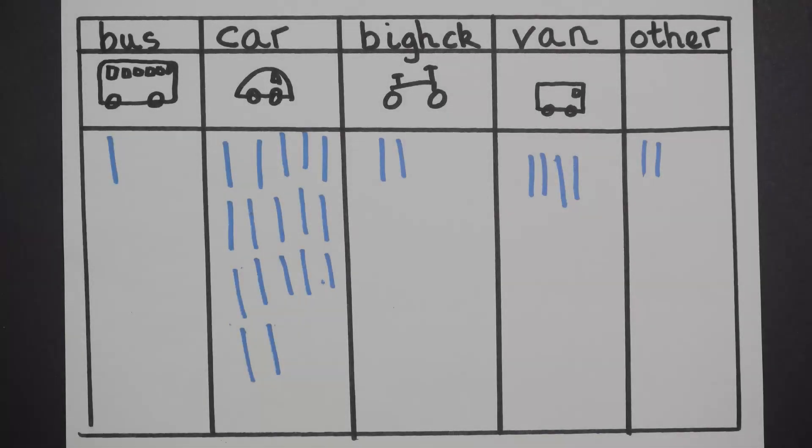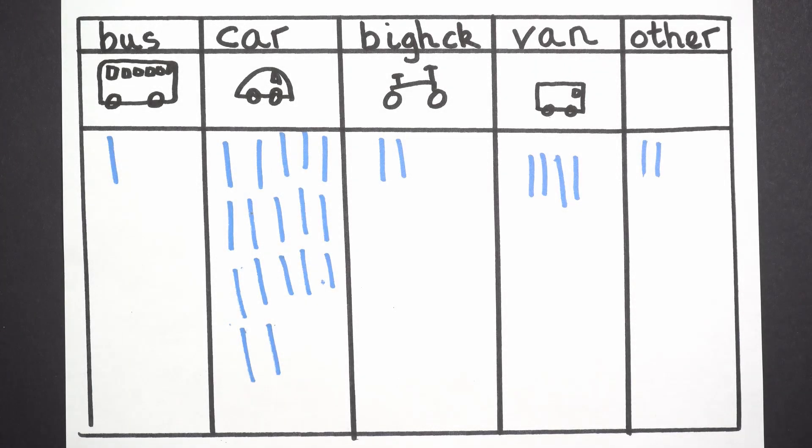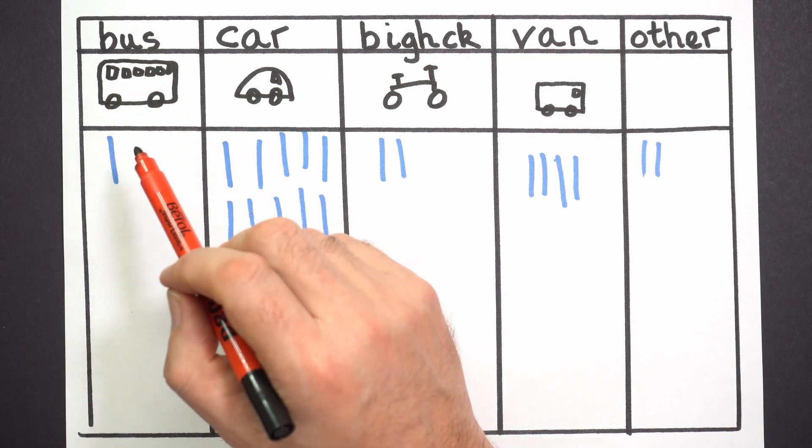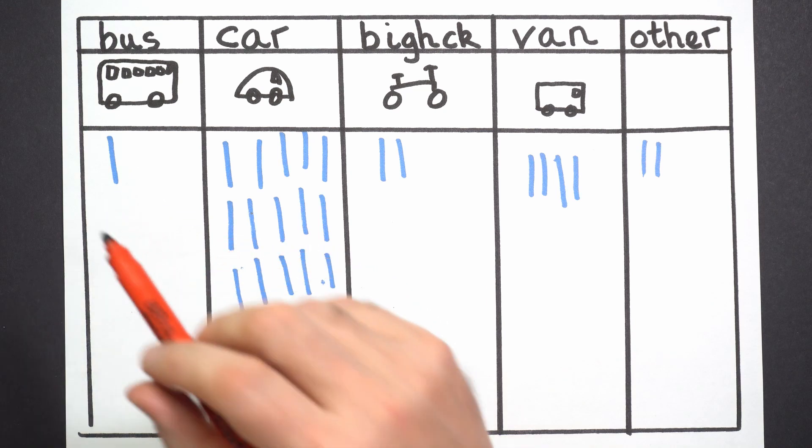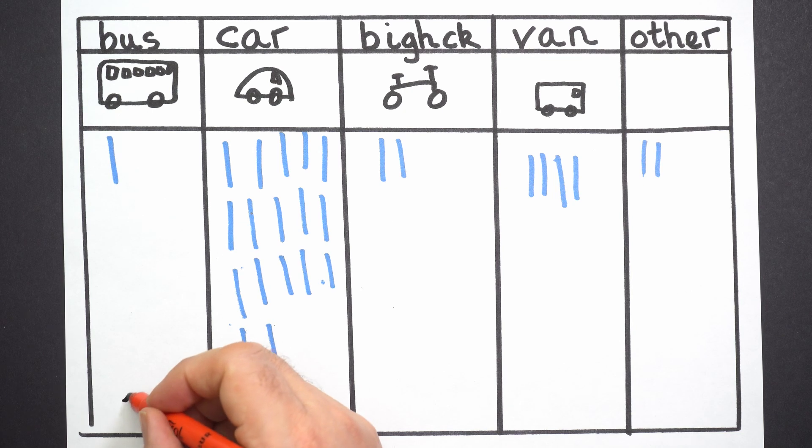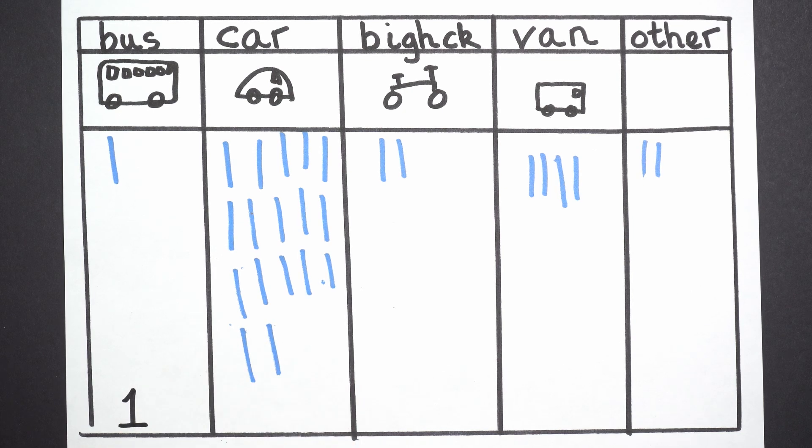So let's have a look at my tally chart. The first thing I'm going to do is count all the different marks that I put down. Each mark, remember, shows one vehicle going past. So how many buses did I see? Can you count the marks or lines? One. So I'm going to put that at the bottom. One bus went past.